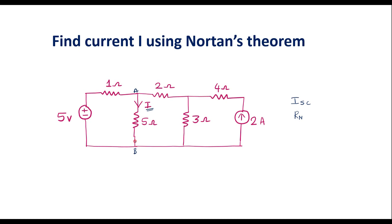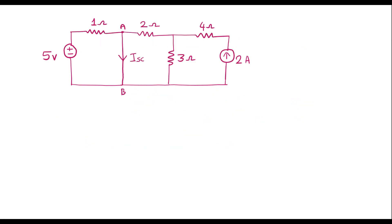When we short it, the current will start flowing. The current that flows through this shorted path is known as ISC. First, I will calculate ISC by shorting terminal A and B. The equivalent circuit looks like this. Here there was a 5 ohm resistor between A and B; I have removed it and shorted it. Now current will flow, and that current is represented as ISC.